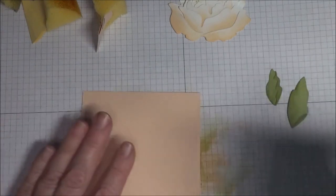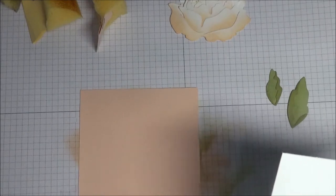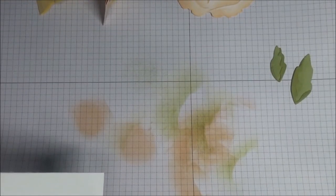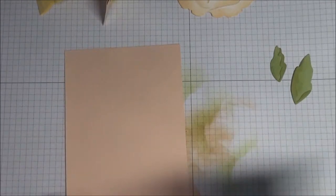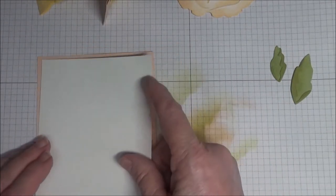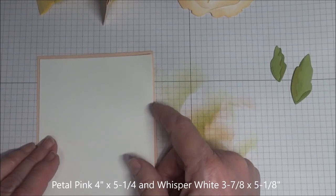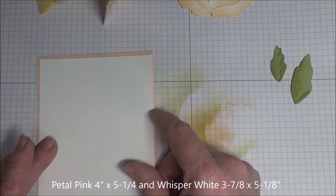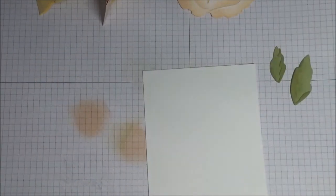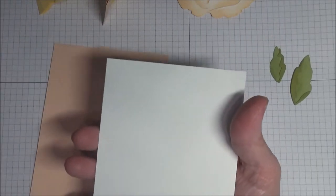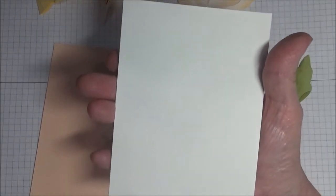So I've got this back layer in petal pink, and I'm going to take this whisper white piece. Now this is four by five and a quarter, and this is just a hair smaller. So it is like three and seven eighths by five and three eighths. I think that would be right. I am going to run this through the Subtles embossing folder, and I'll be right back.